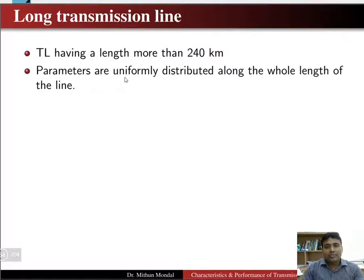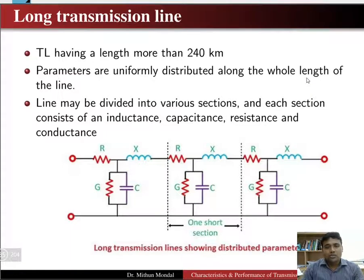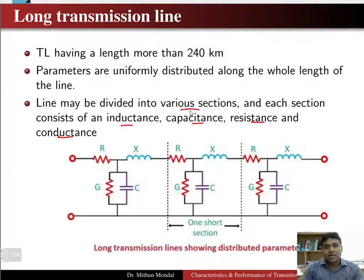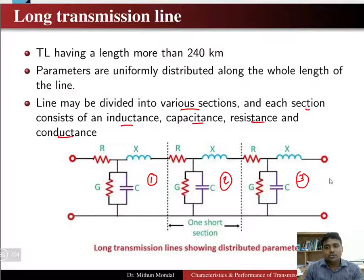The parameters are uniformly distributed along the whole length of the line. The parameters are basically the inductance, capacitance, resistance, and conductance. These are divided into various sections and each section consists of these parameters. In this figure we can see that it has been divided into various sections — first section, second section, third section, and so on.